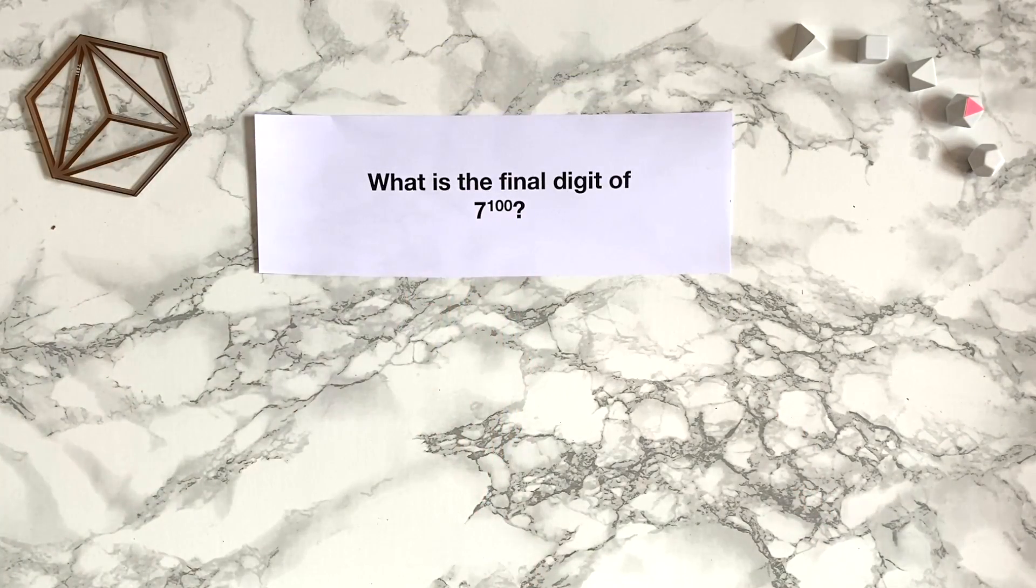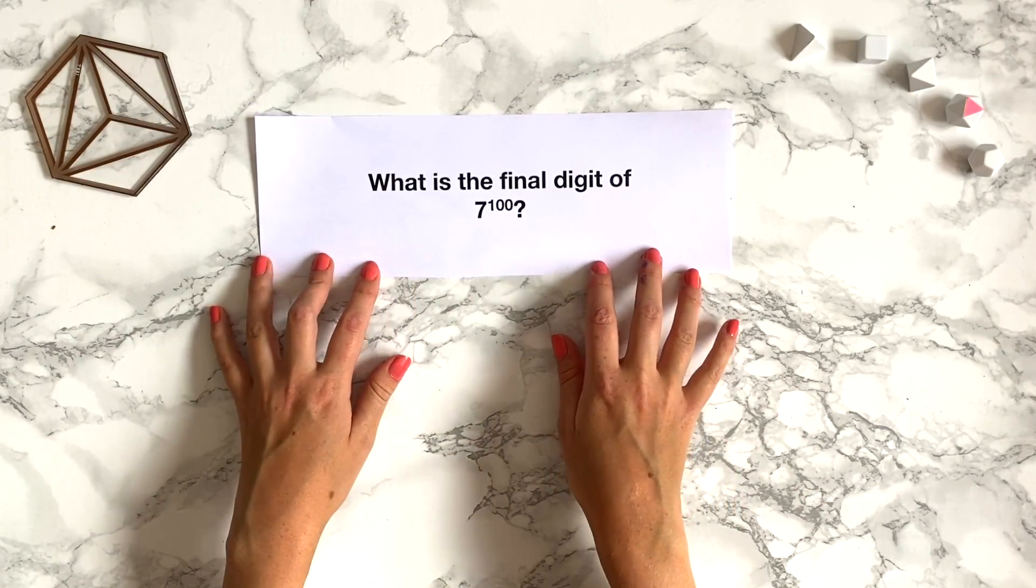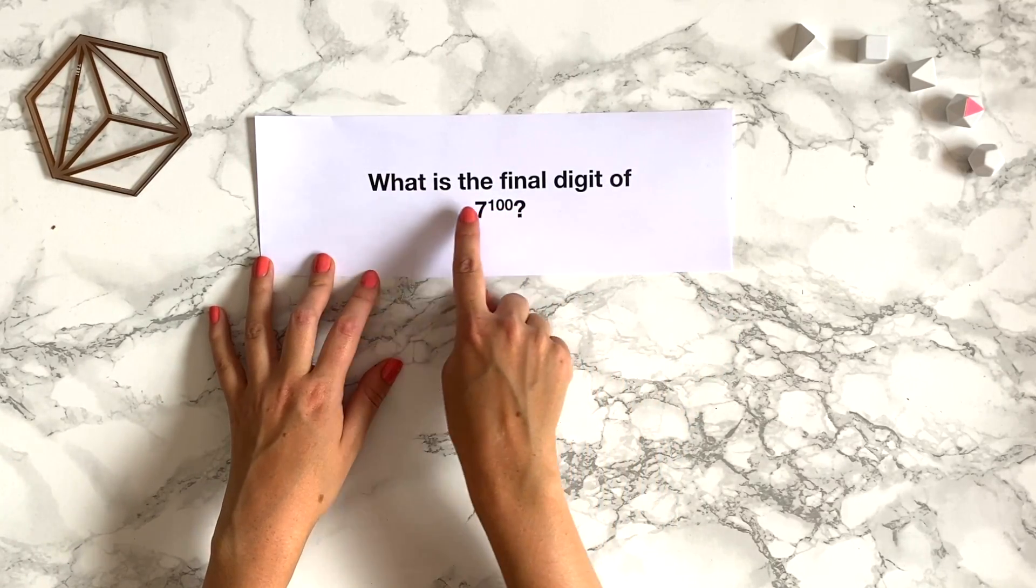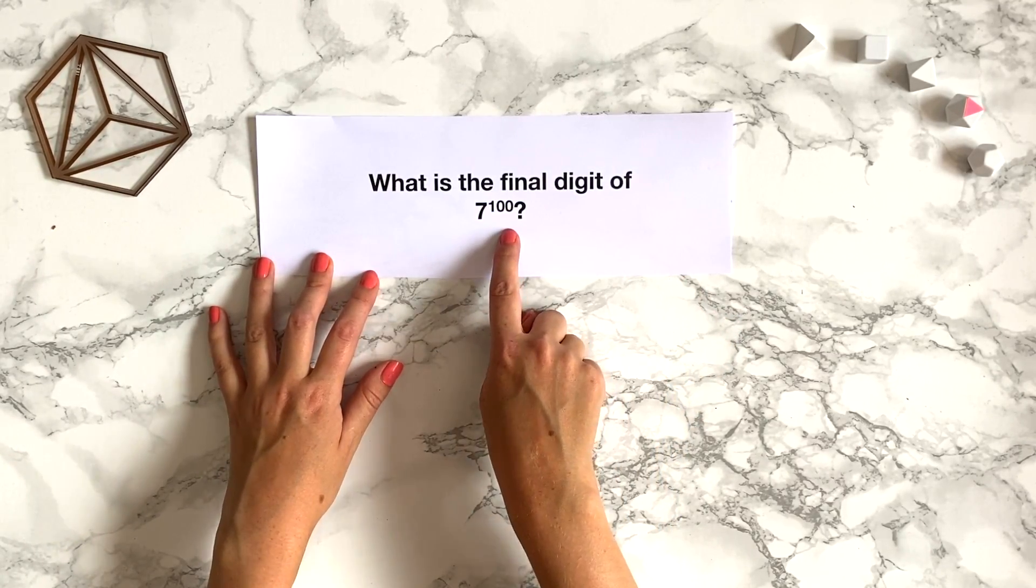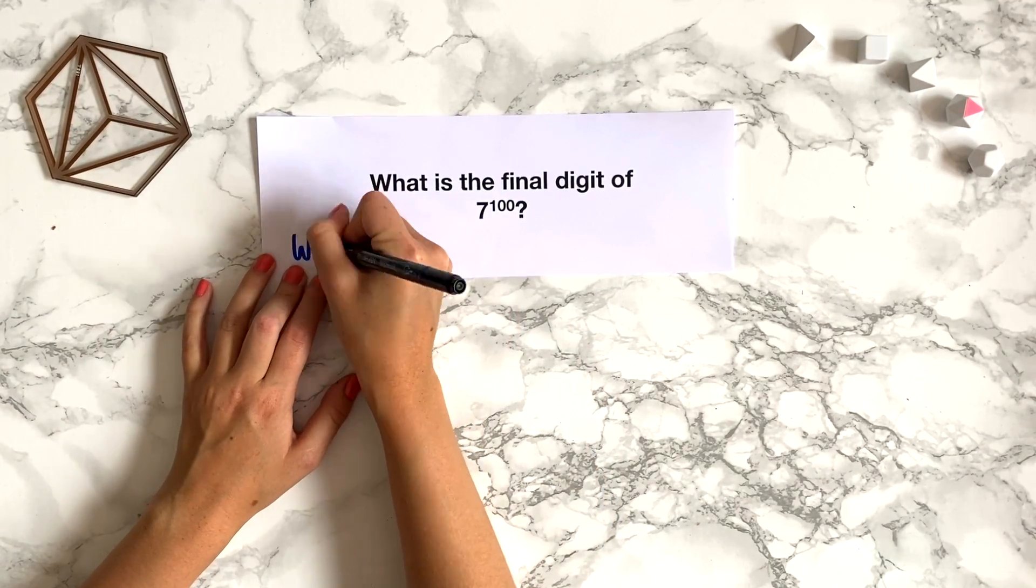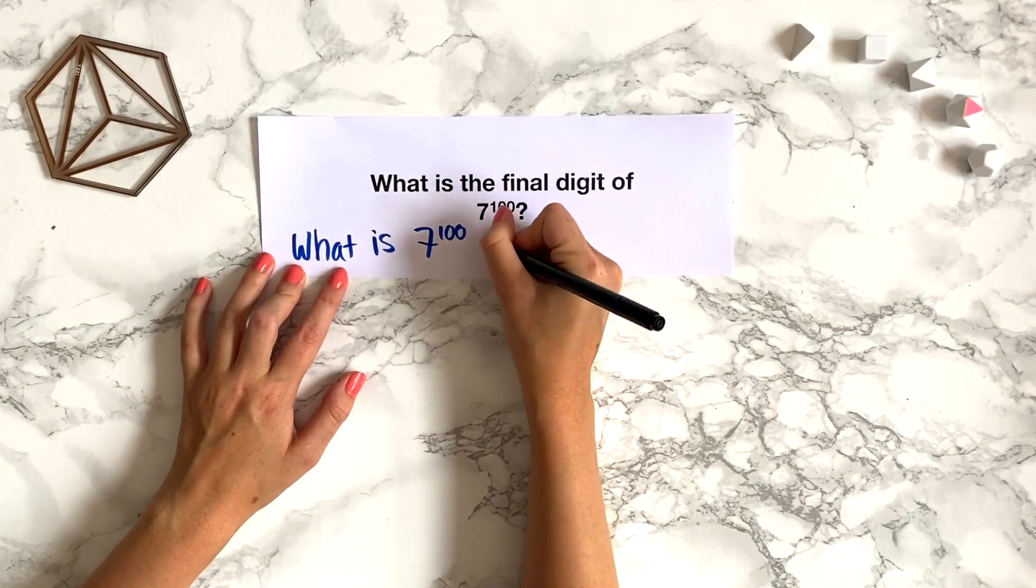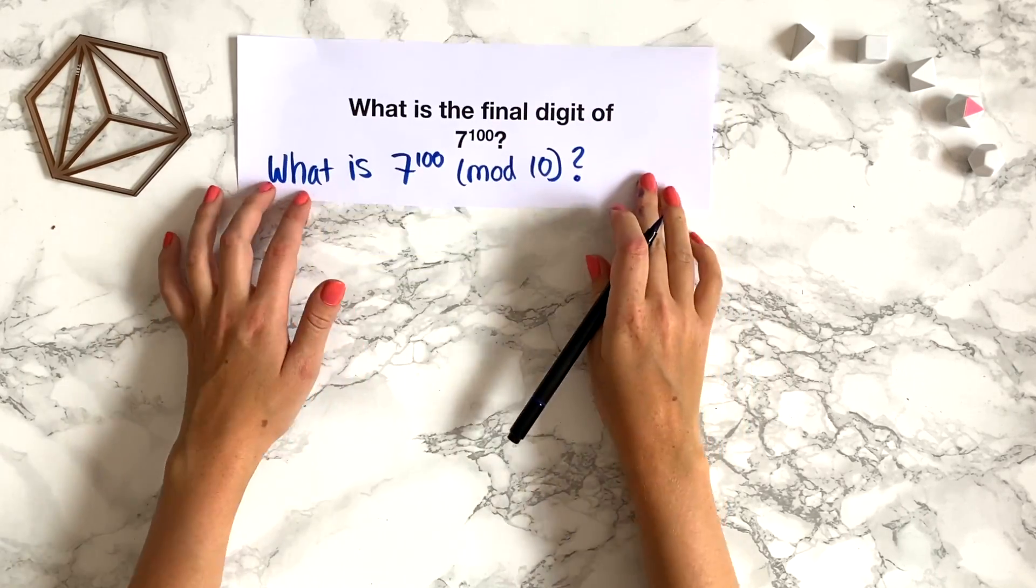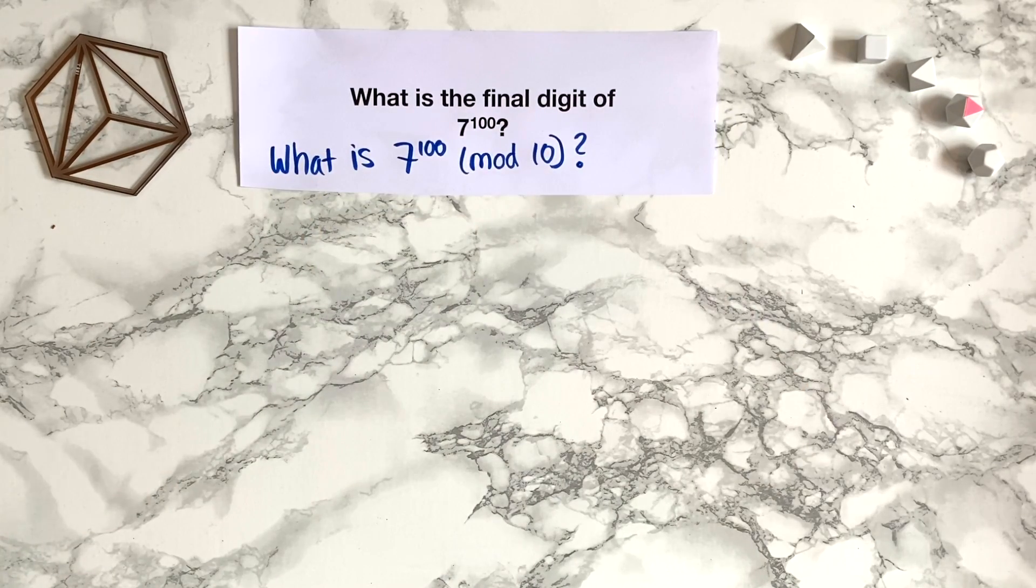So this is really interesting for our question here because it means that this question, what's the final digit of 7 to the power of 100, is actually the same as asking what is 7 to the power of 100 modulo 10. And so suddenly this question is a lot more approachable if we use modular arithmetic.